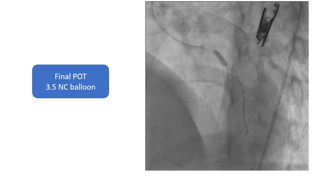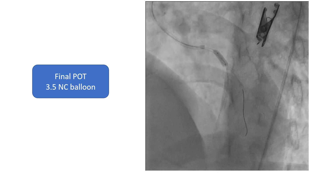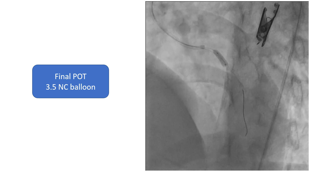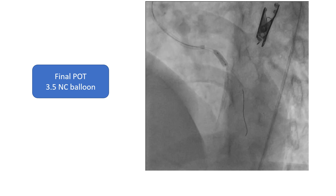The final POT was performed using an NC balloon 3.5. Another important thing to remember is that during preparation for the case, you must know what balloons are available in your cath lab, so that the length of the stent proximal to the bifurcation should accommodate the available balloon used for the final POT. This is to avoid inflation of the balloon in the ostial area.